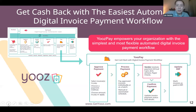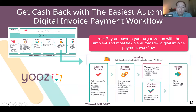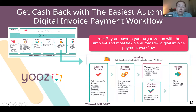USE Pay empowers your organization with the simplest and most flexible automated digital invoice payment workflow. If you're tired of cutting checks and want an easier way to pay within our system, you can do so. You can set control levels within those payments, pay individual invoices, and also do batch payments. Options include virtual credit card, ACH, electronic check, and paper checks. With one click you can distribute those and receive your confirmation payment, and all that information will be updated in real time into your ERP.